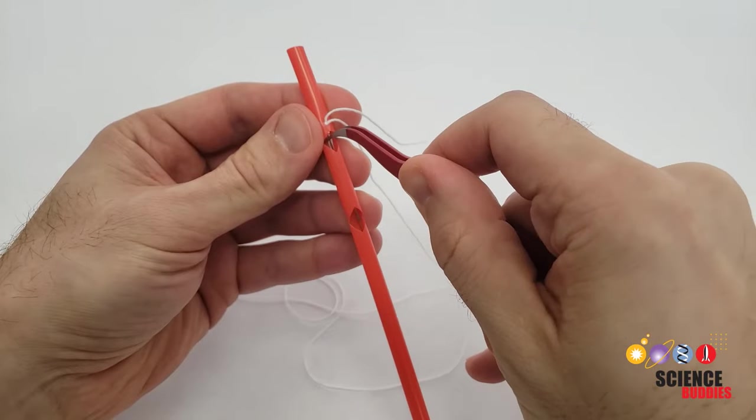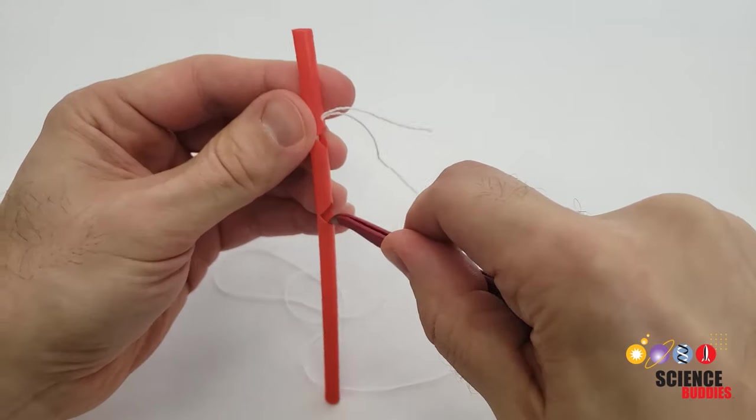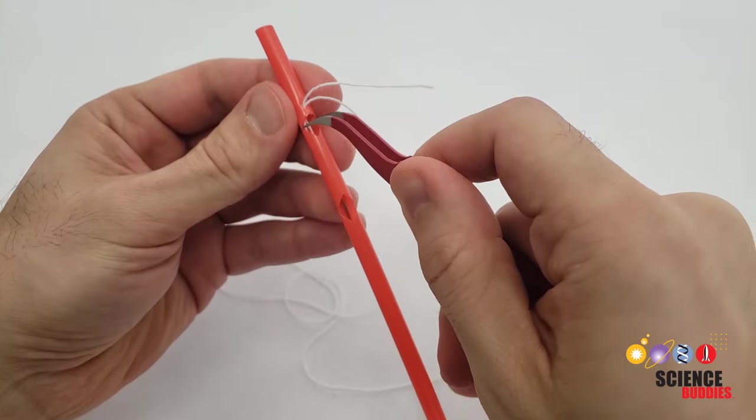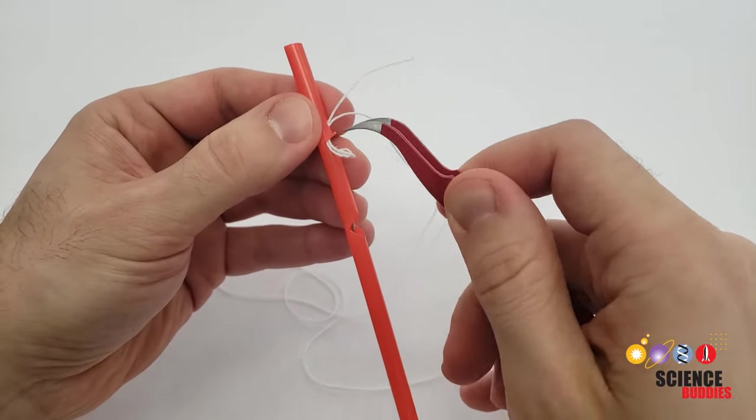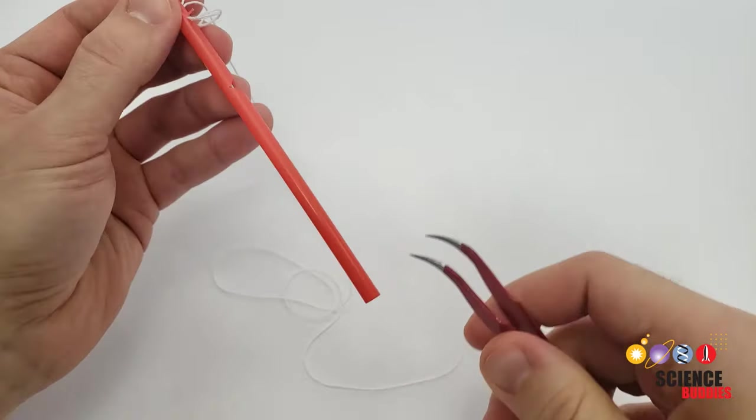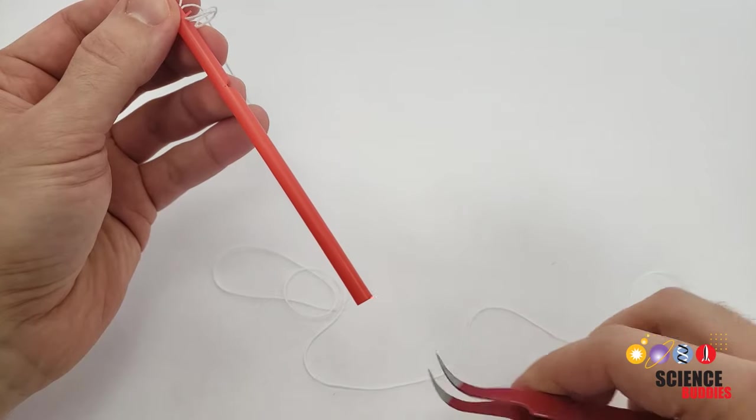If you hold the straw vertically, eventually the weight of the needle should help pull the string through. You can also grab onto the string and help pull it through the hole using the tweezers. Eventually, you want the needle to come all the way down out the bottom of the straw.